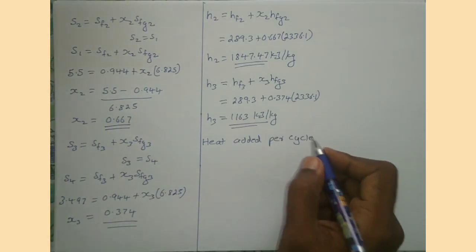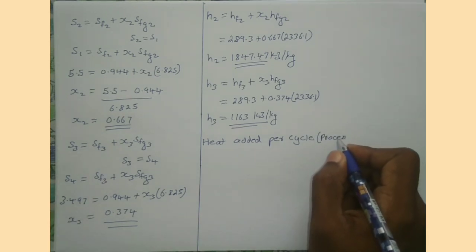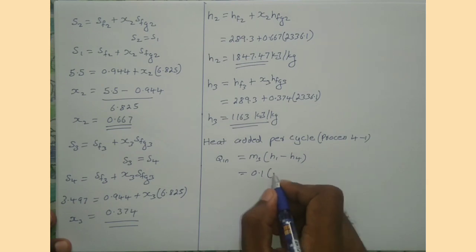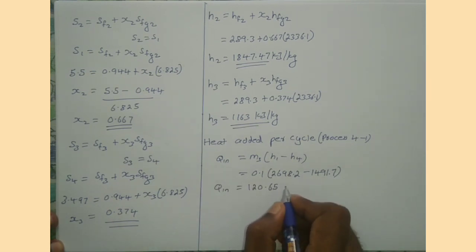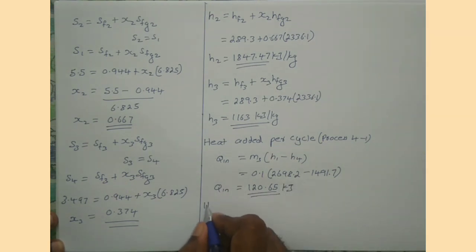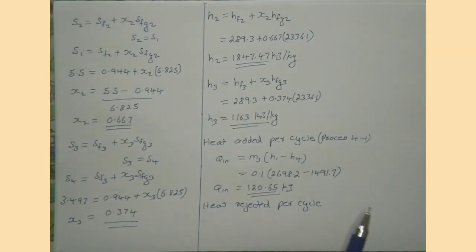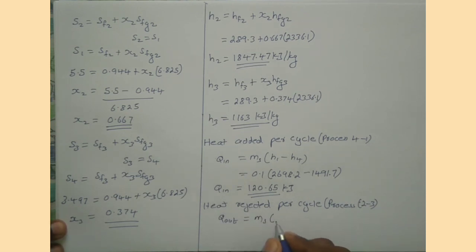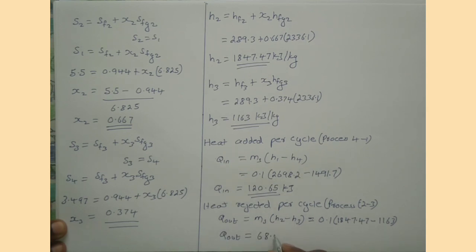Heat added per cycle — that is process 4 to 1. We can write Q_in equals ms times (H1 minus H4). Substituting values, we get Q_in equals 120.65 kJ. Now we can find heat rejected per cycle, i.e. process 2 to 3: Q_out equals ms times (H2 minus H3). Substituting values, we get Q_out equals 68.447 kJ.